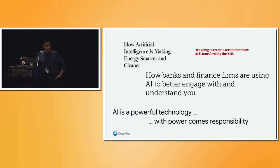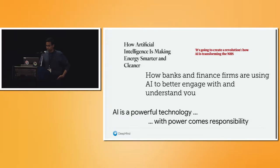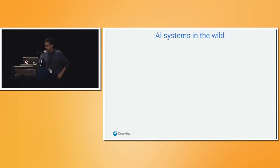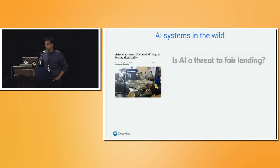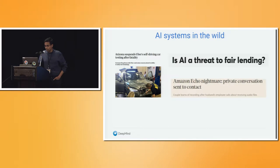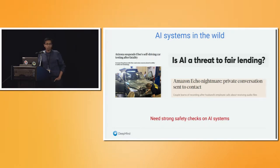We need to make sure that our AI algorithms behave well, in the sense that they don't make bad decisions that have significantly harmful consequences. We can already see lots of examples of this actually happening — with self-driving cars, with unfairness in bank lending systems, and with systems in your home that record conversations and email them to others without your permission.